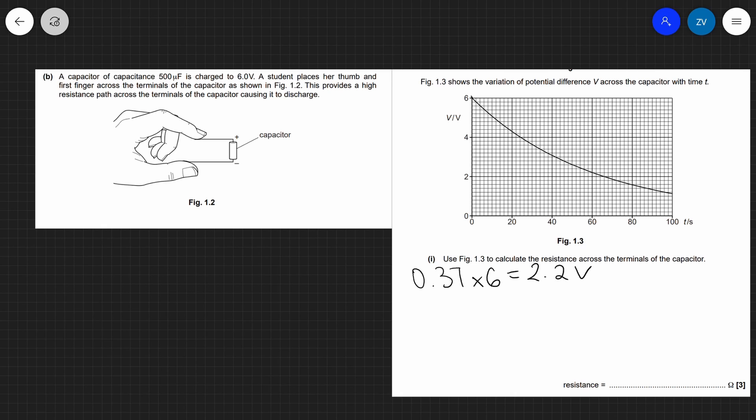Now the time at which we hit 2.2 volts is just here, which we can see corresponds to 60 seconds. Just here actually, like so. So that means that our time constant is going to be 60 seconds because this is the time at which the voltage falls down to 2.2 volts.